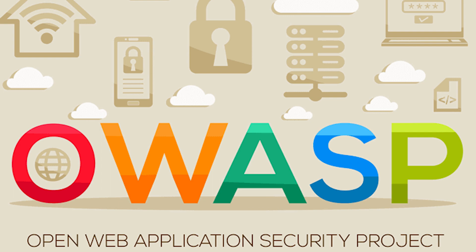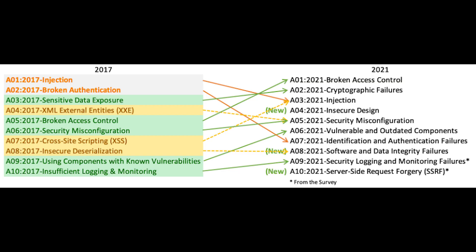They are mostly known for their Top 10 research project. The Top 10 research project offers rankings of and remediation advice for the top 10 most serious web application security dangers. The report is founded on an agreement between security experts around the globe. The risks are graded according to the severity of the vulnerabilities, the frequency of isolated security defects, and the degree of their possible impacts.